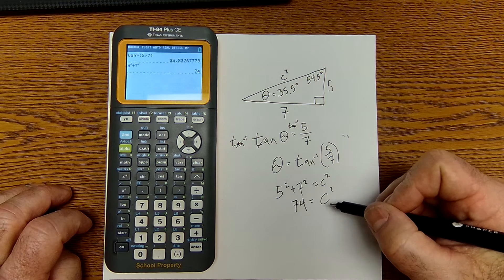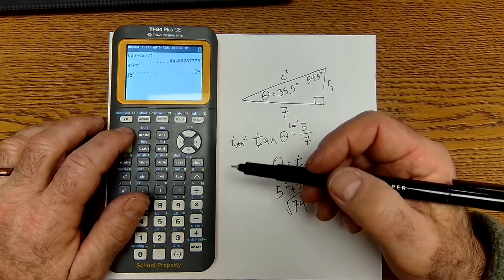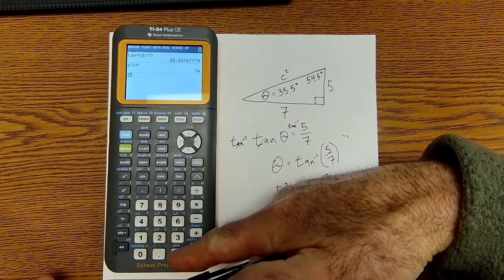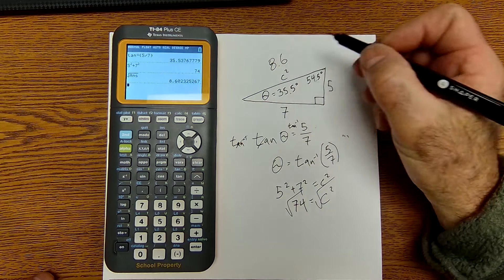I have to take square root of both sides. My calculator, I go second square root, and I use my answer key down here and hit enter. And I can see the length of this is 8.6.